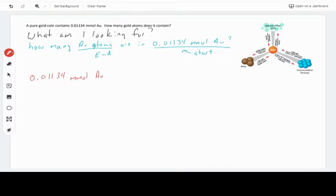Let's do that. I'm going to start with 0.01134 millimoles of gold. Now, if we look at our mole map here, we are starting in kind of moles, and we want to go to particles, representative particles here.